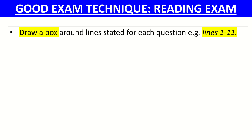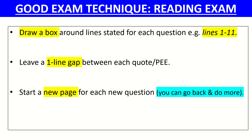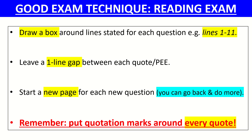Good exam technique for the reading exam: draw a box around the line numbers stated. For example, if it says lines one to eleven, put a box around them — guaranteed some students will answer from line 12 otherwise. Leave a one-line gap between each quote and point to make it clear to the examiner. Start a new page for each question so you can always go back and add more. Put quotation marks around every quote — this whole exam is about quotes, so signal that very explicitly to the examiner.